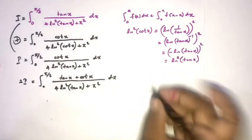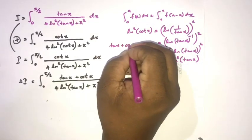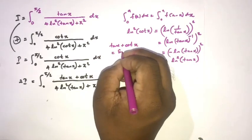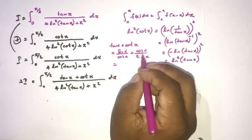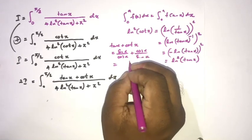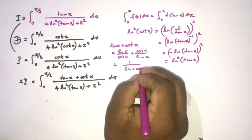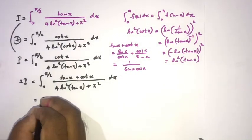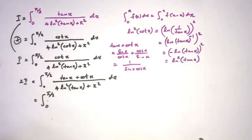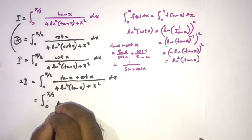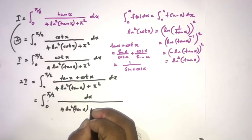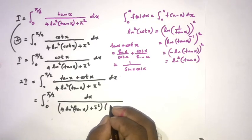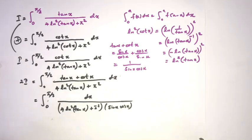We simplify tan(x) + cot(x): that is sin(x)/cos(x) + cos(x)/sin(x) = [sin²(x) + cos²(x)] / [sin(x)·cos(x)] = 1/[sin(x)·cos(x)]. So 2I equals the integral from 0 to π/2 of 1/[sin(x)·cos(x)] over [4·ln²(tan x) + π²]·sin(x)·cos(x) dx, simplifying the denominator.